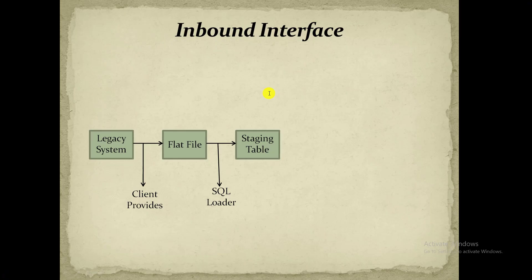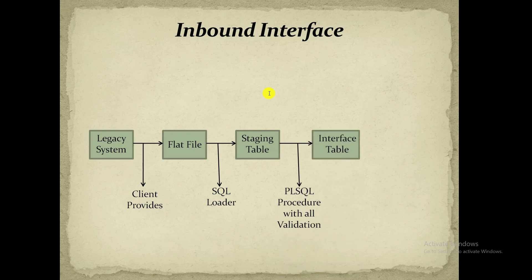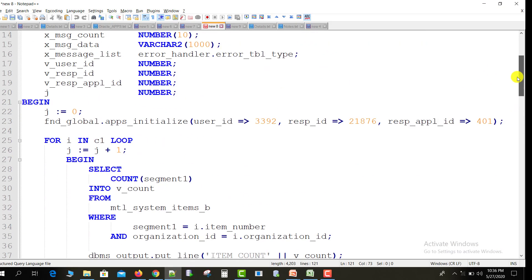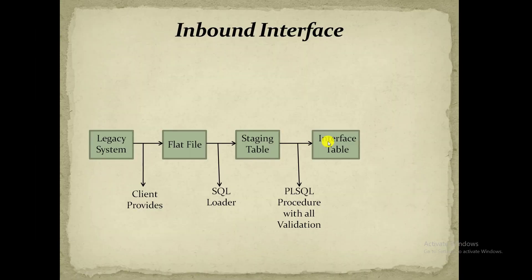Once your data is inserted into the staging table properly, the next step is to insert it into the interface table. The data is inserted but we have not done any type of validation for it. That's why we have to do all the validations — we write a PL/SQL procedure with all types of validation. From the staging table to the interface table, the data moves using this PL/SQL procedure with all types of validation. I have a PL/SQL procedure with all types of validation in a file, which I will attach in the comment section.